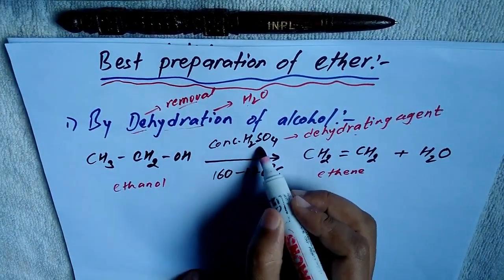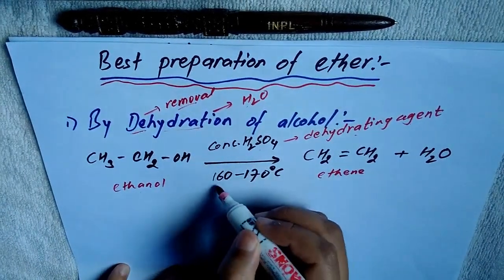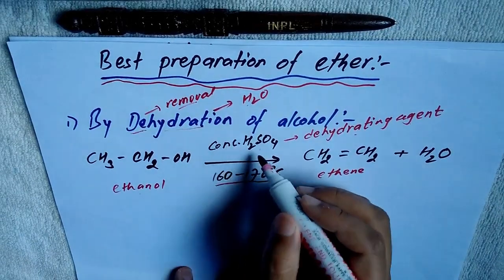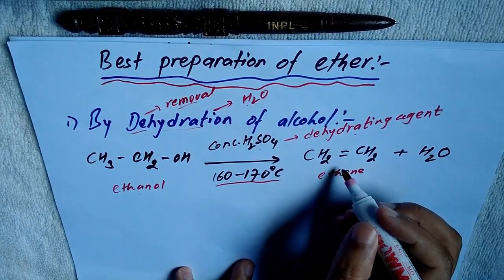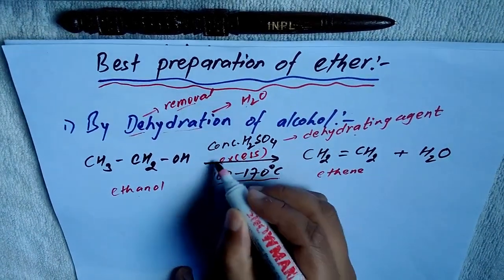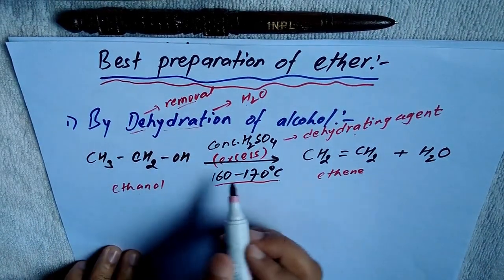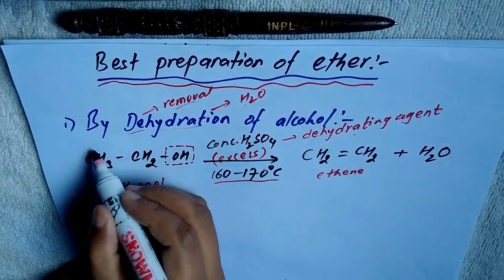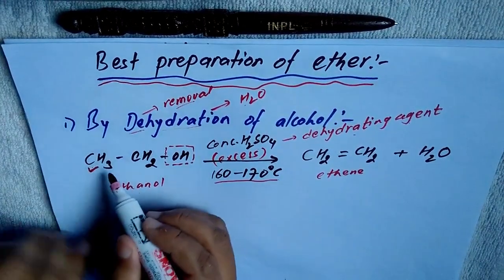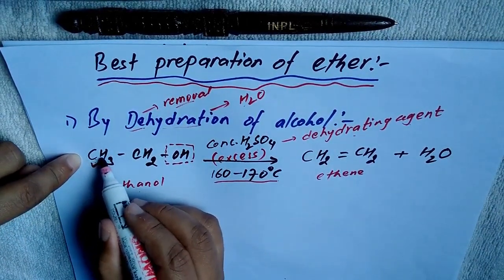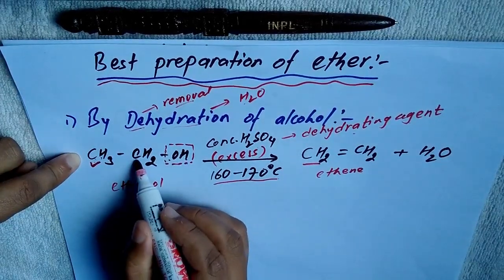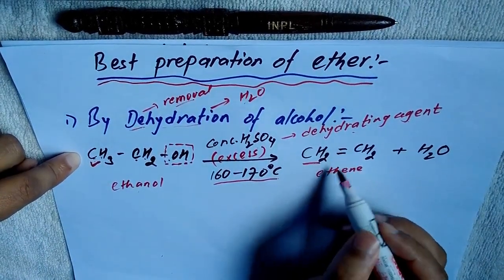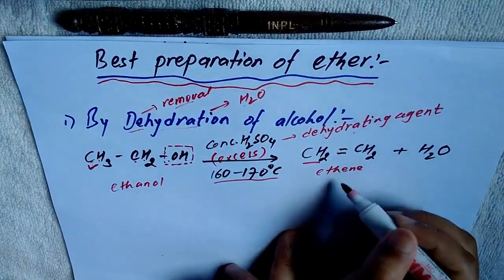One dehydrating agent is concentrated H₂SO₄. When ethanol is heated at about 160 to 170°C with excess concentrated H₂SO₄, it does not give ether — it gives ethylene. The mechanism involves removal of water: we remove the OH from one carbon and a hydrogen from the adjacent carbon. After removing them, each carbon has CH₂ and a double bond forms between the two carbons, giving ethylene.